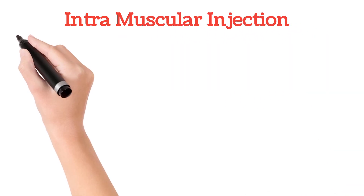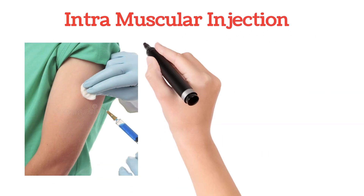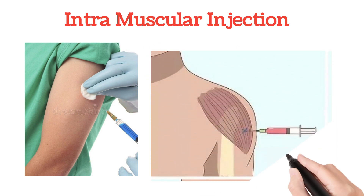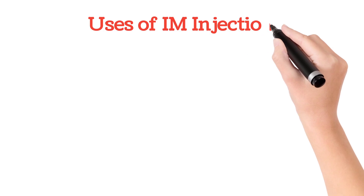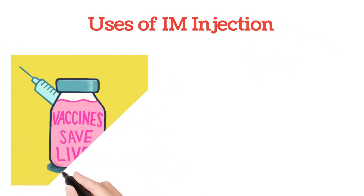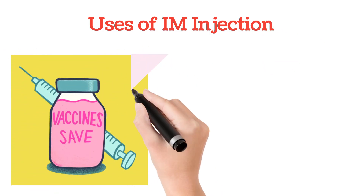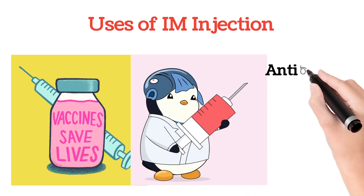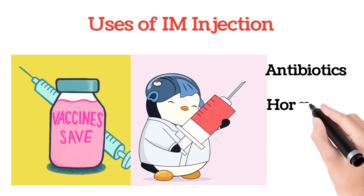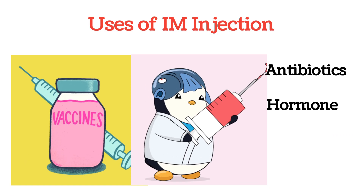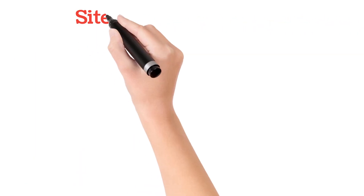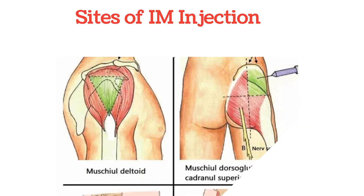Next comes the intramuscular injection. As the name suggests, we inject the medicine into the muscle. The muscle has rich blood supply so there is rapid absorption rate and we can get the response quickly. Vaccines and medicines like antibiotics, penicillin, streptomycin, corticosteroids, and certain hormonal injections like testosterone and progesterone are given through intramuscular injection. Sites include upper outer thigh, deltoid area muscle, shoulder muscle, and hip region.